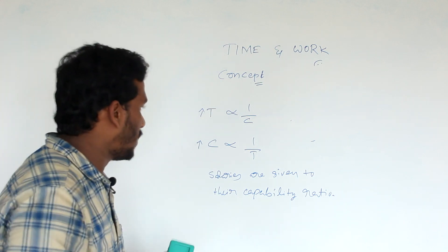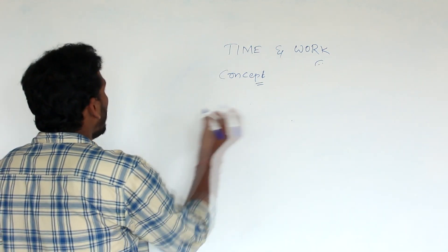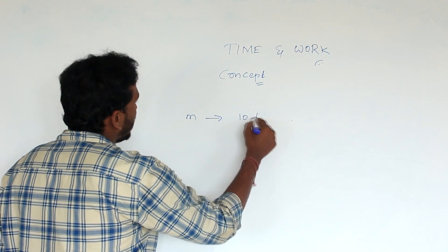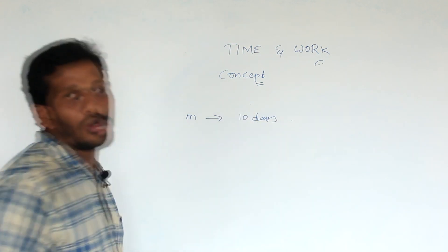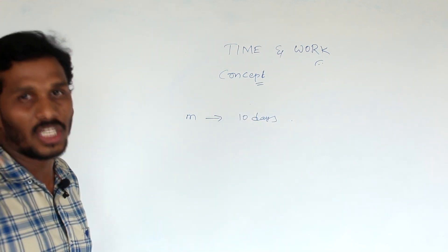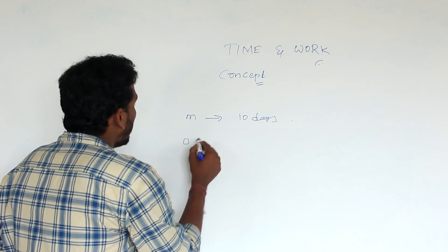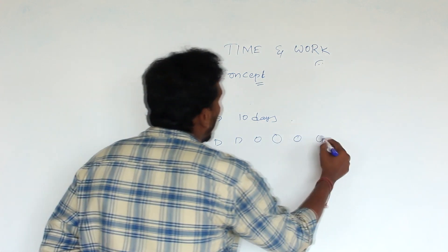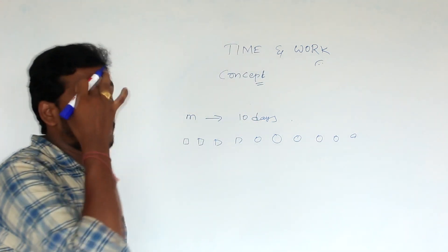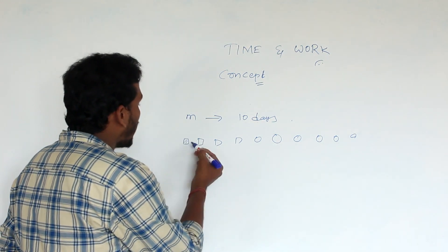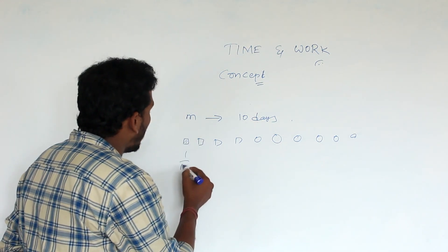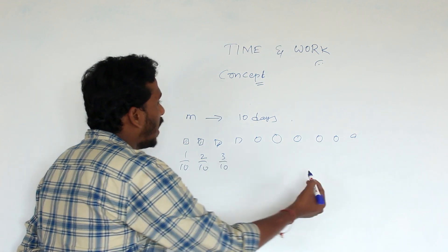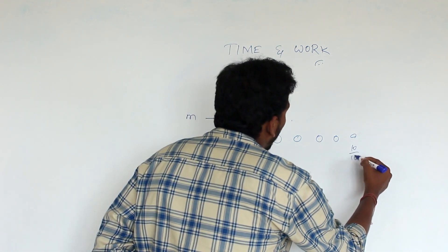The next concept: consider one man working. If one man completes work over ten days — day one, two, three... up to ten — then after ten days the work is completed. The man is working on a job that takes n days, and after those n days the work is fully done.